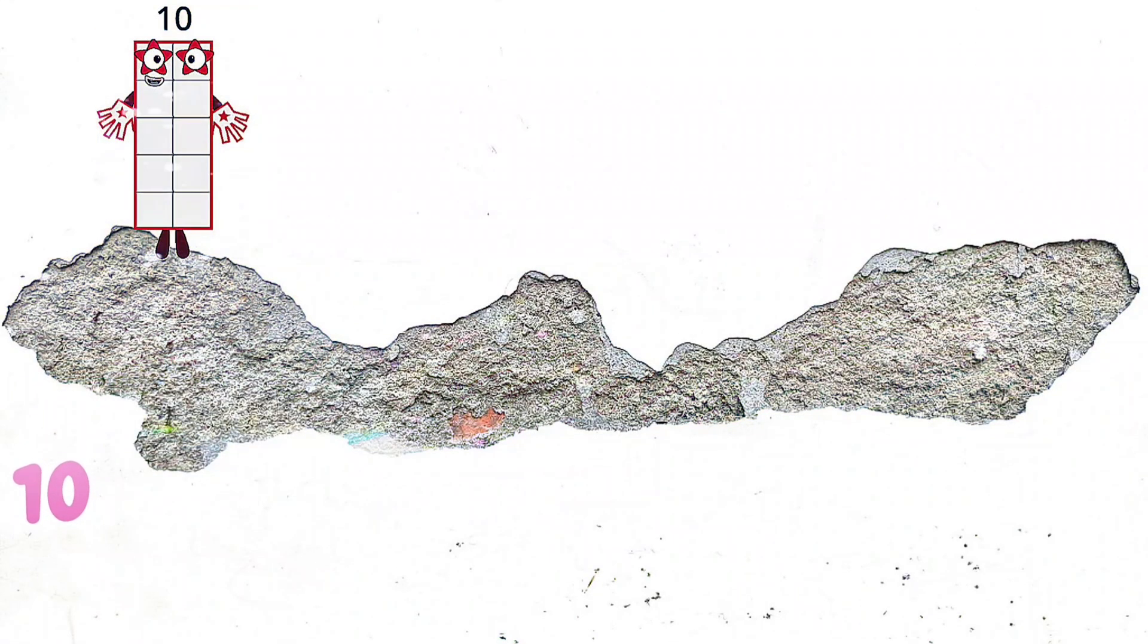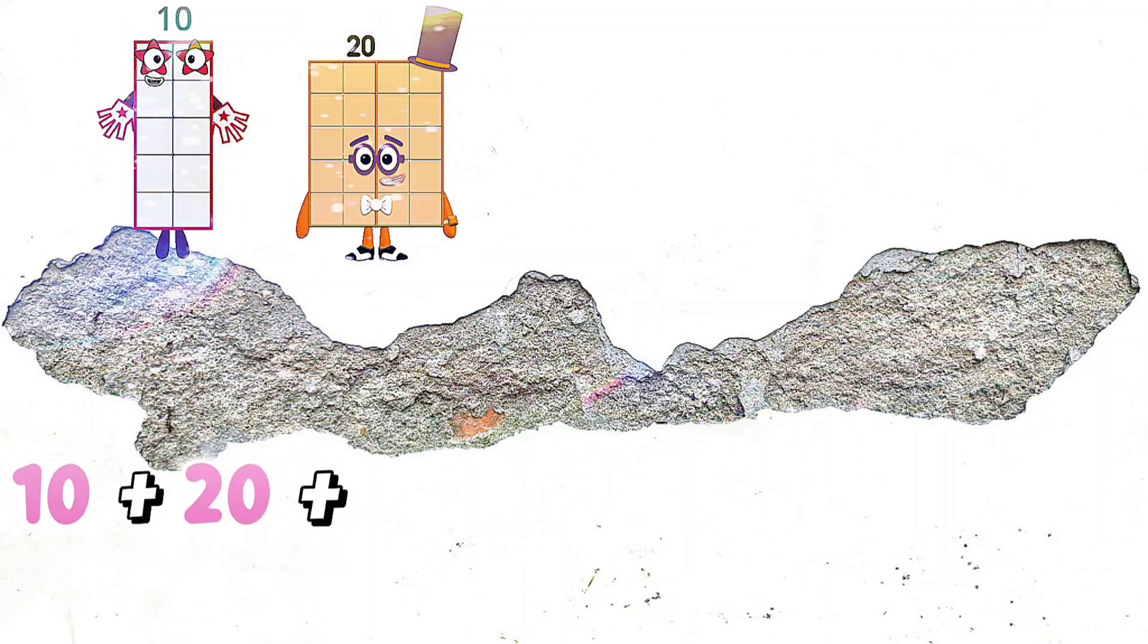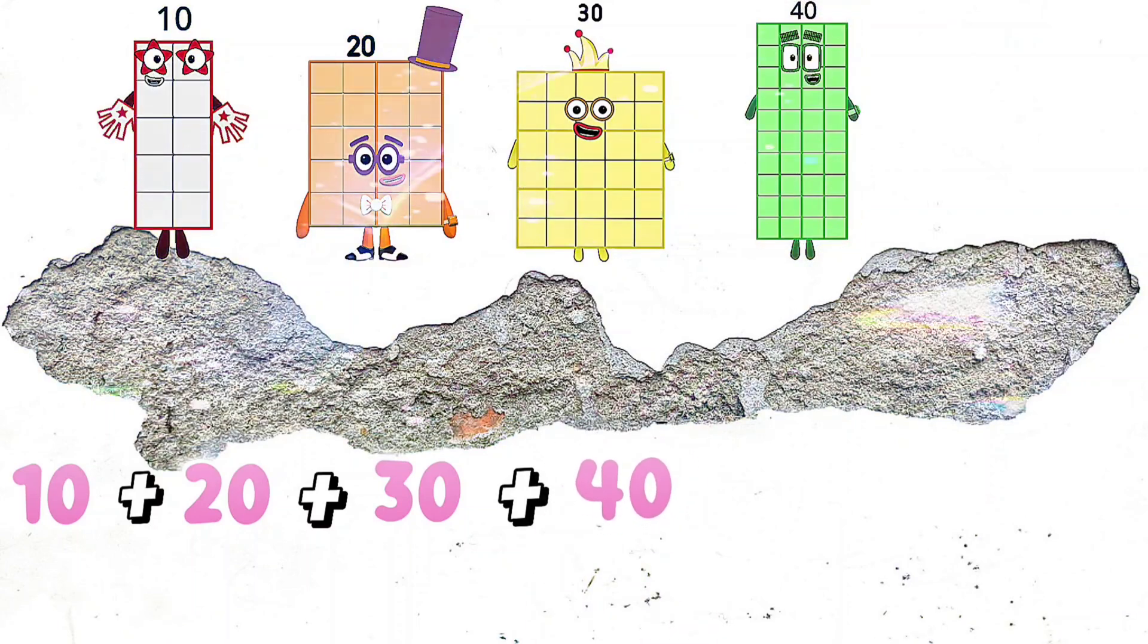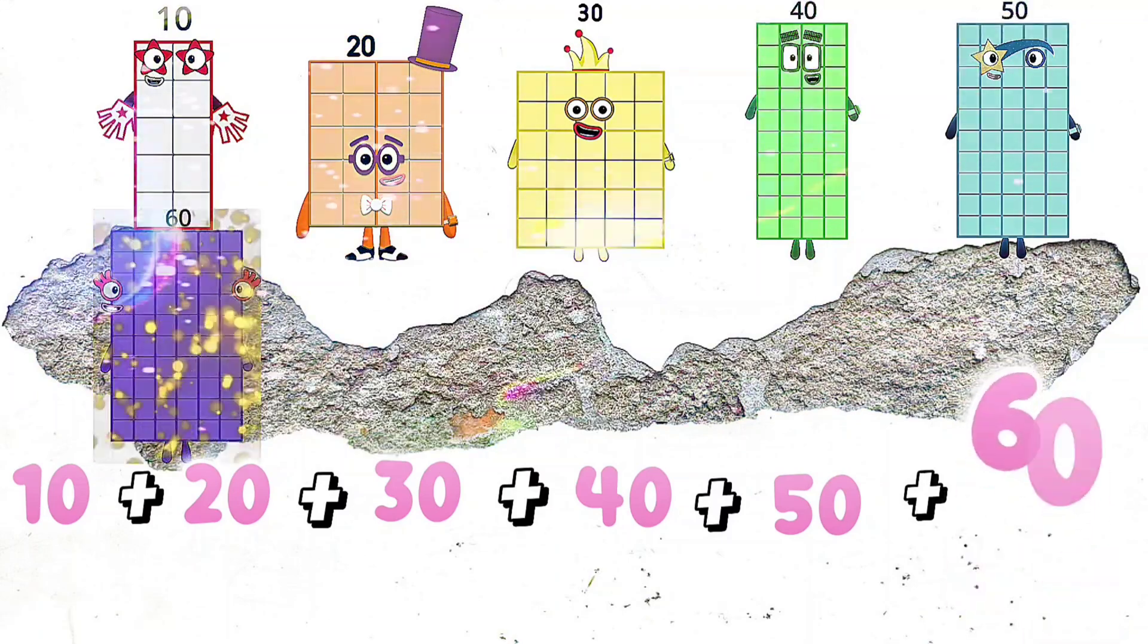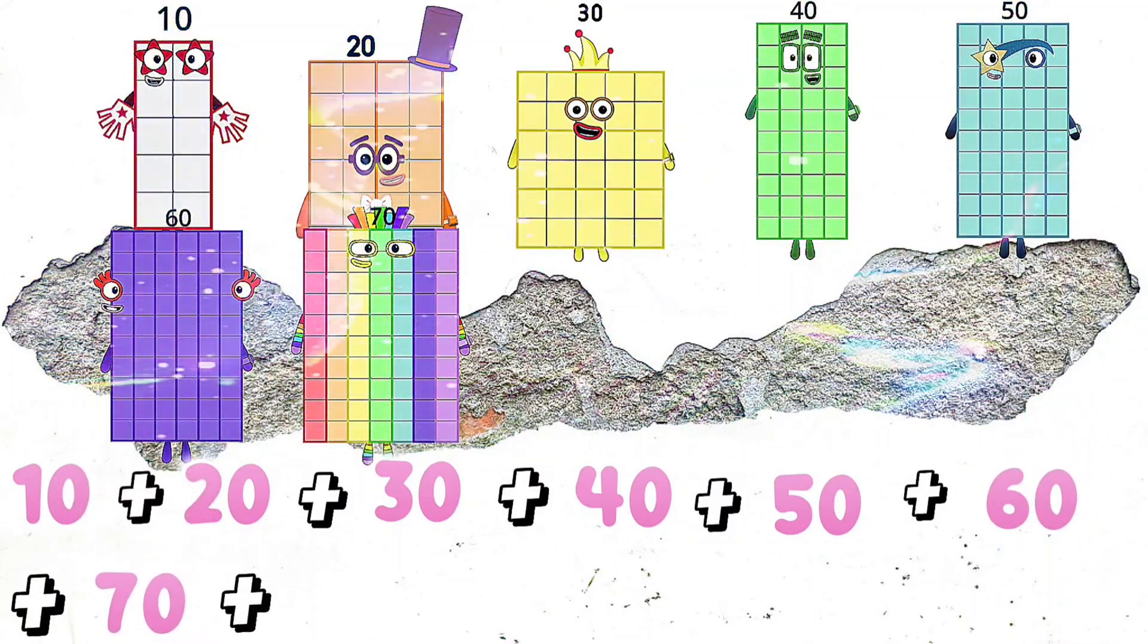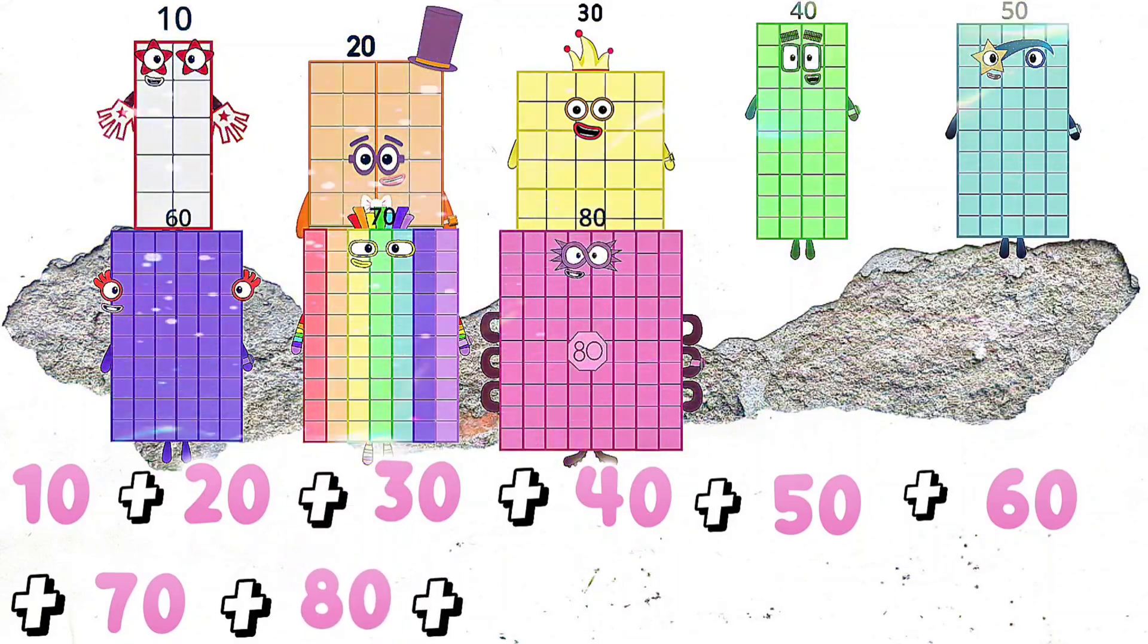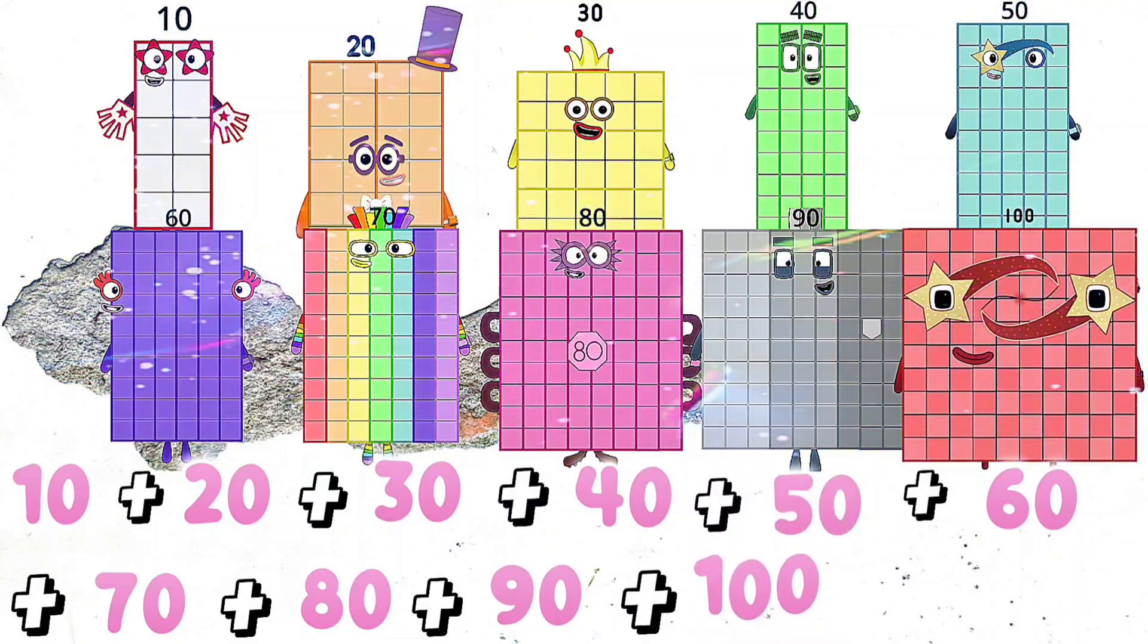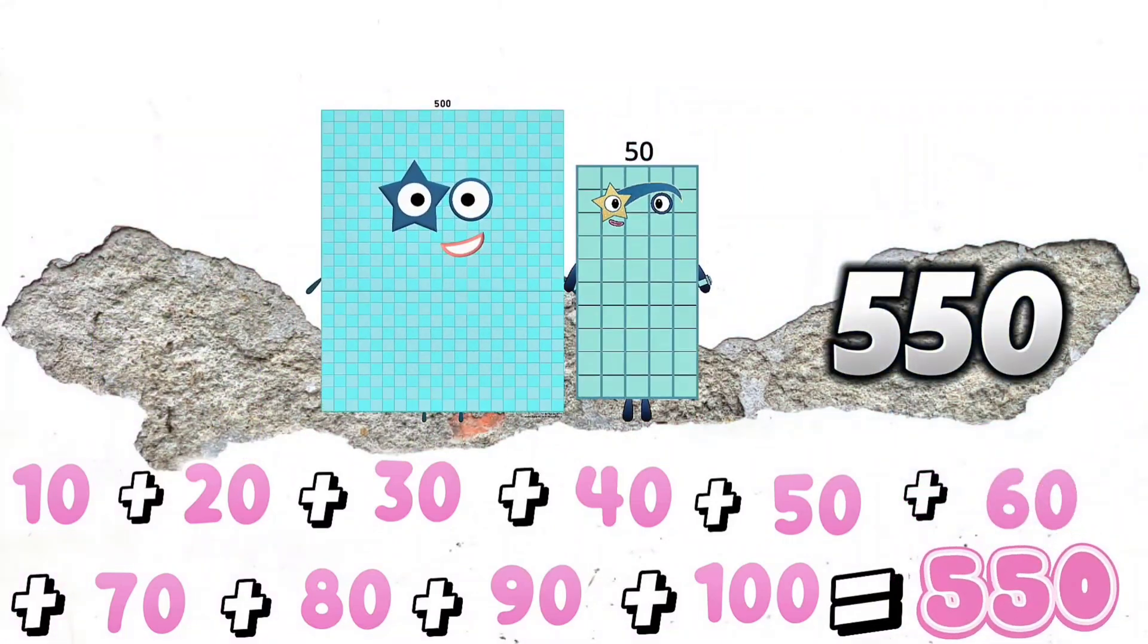10 plus 20 plus 30 plus 40 plus 50 plus 60 plus 70 plus 80 plus 90 plus 100 is equals to 550.